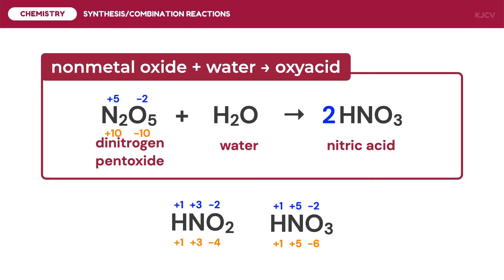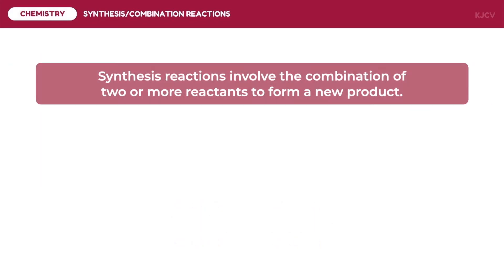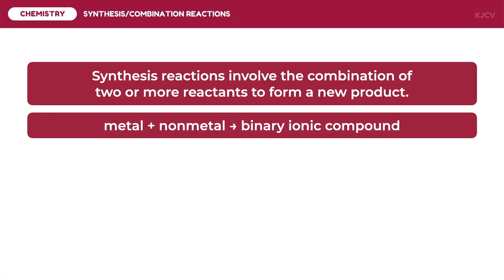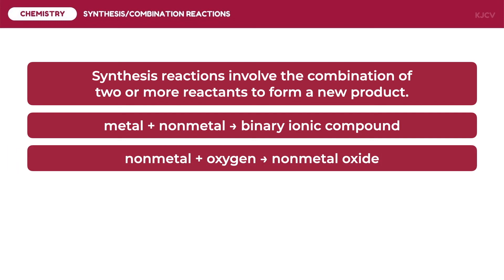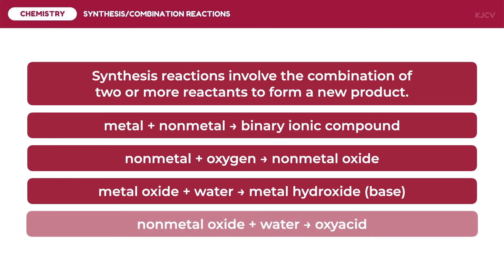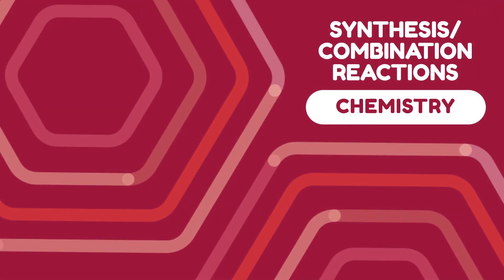Now that we have discussed the different synthesis reactions, here are the key points: synthesis reactions involve the combination of two or more reactants to form a new product. Metals react with non-metals to produce binary ionic compounds. A non-metal reacts with oxygen to produce a non-metal oxide. A metal oxide reacts with water to produce a metal hydroxide or base. A non-metal oxide reacts with water to form an oxy acid.